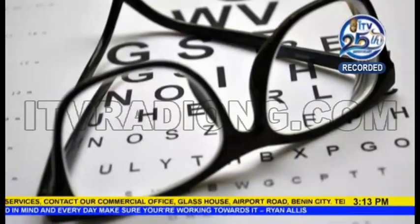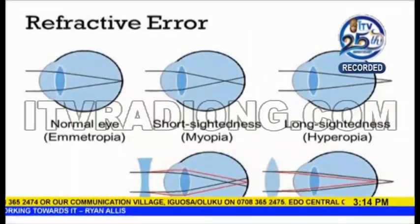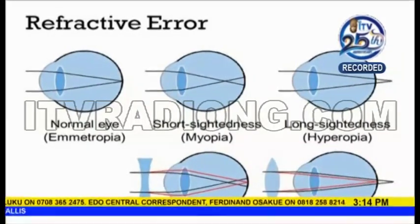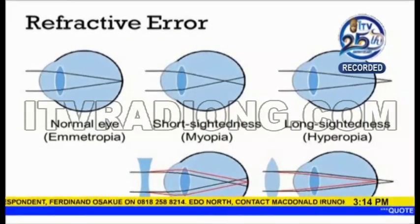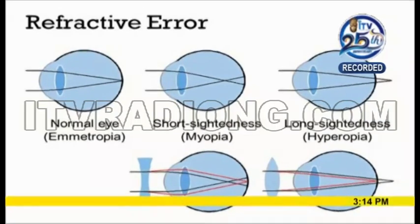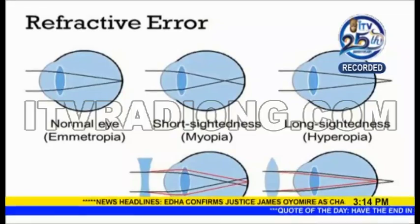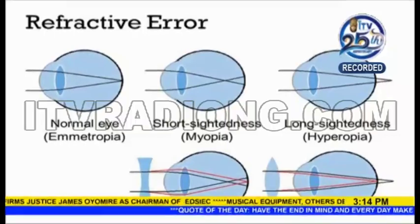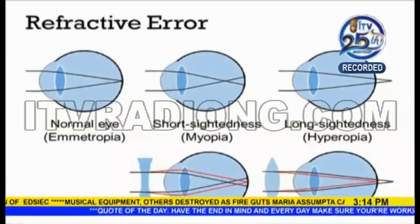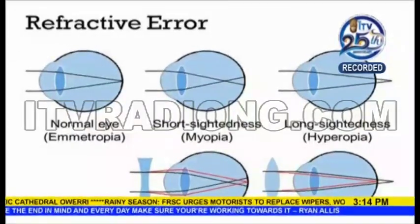There are only a few cases where glasses are temporary, and the doctor will explain those to you. It depends on what is causing the symptom and the type of refractive error. There are some cases where the eye muscles are stressed — we see this mostly among teenagers. We need to relax the muscles, and we also have to look at the visual demand: what is the person doing and how are they utilizing the eye?